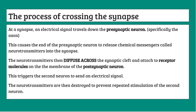Diffusion is simple to understand, but 'diffuse across' is the key term that will get you your marks for this question. It's the term that's always in the mark scheme and shows that you understand how neurotransmitters cross the synaptic cleft. Because neurotransmitters don't walk across, they don't fly across — they diffuse across. You have to say 'diffuse across' to get the marks.